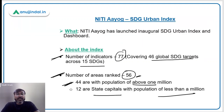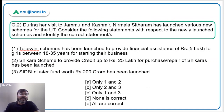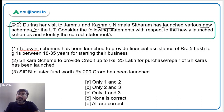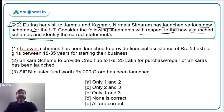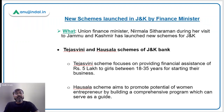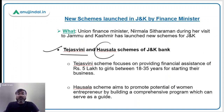Moving to question number 2: during her visit to Jammu and Kashmir, Finance Minister Nirmala Sitharaman launched various new schemes for the union territory. You have to consider the following statements with respect to the newly launched schemes and identify the correct statement. The first schemes are Tejasvini and Hausla, launched by Jammu and Kashmir Bank.